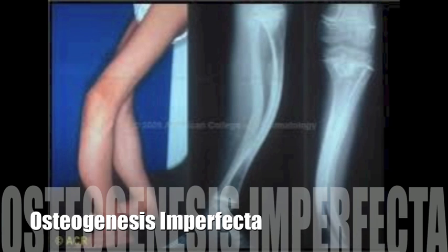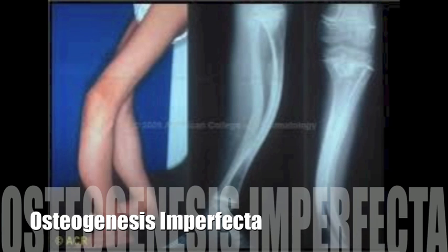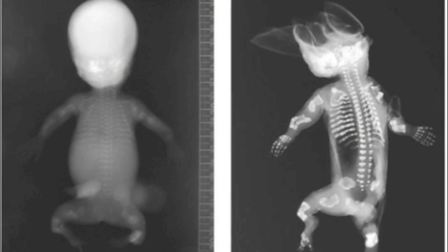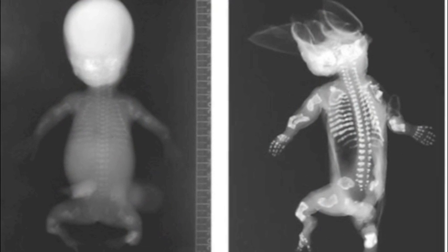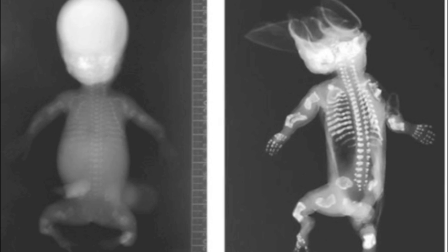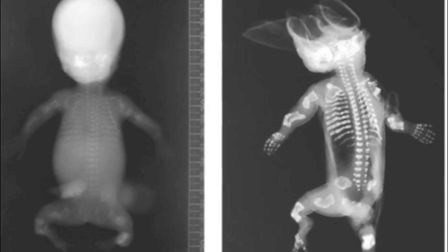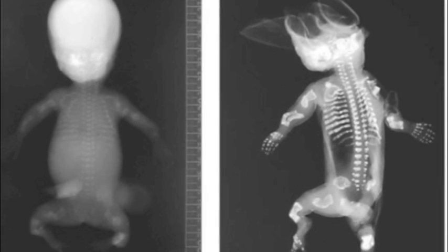Osteogenesis imperfecta is also quite common in the realm of bone diseases. This is an inherited disorder of the bones that presents itself during conception. Also known as brittle bone disease, osteogenesis imperfecta is the result of an insufficient amount or incorrectly shaped bone collagen, which is the protein in the bones that ensures they are strong. This makes the bones unusually delicate and more susceptible to breakage.